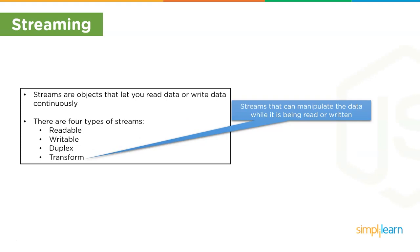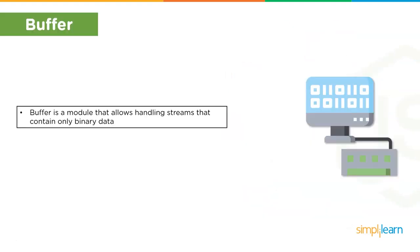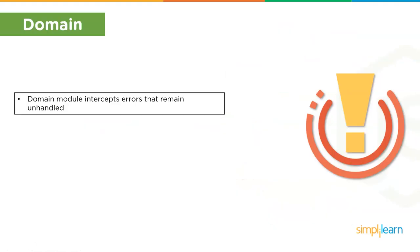Moving on to the next component — buffer. The JavaScript language has no mechanism for reading or manipulating streams of binary data. The buffer module allows handling of streams that contain only binary data. An empty buffer of length 10 can be created using this method.